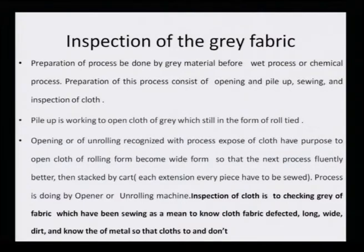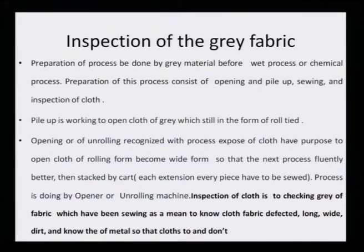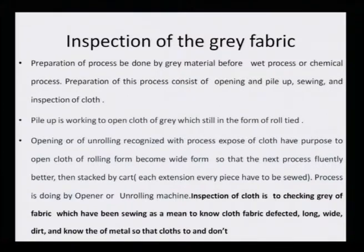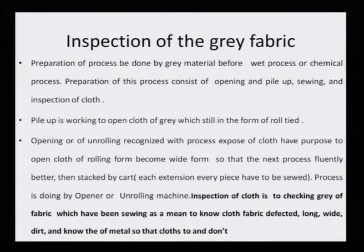Inspection of the gray fabric: preparation consists of opening, piling up, sewing, and inspection of the cloth. Opening or unrolling of the cloth has the purpose of opening the cloth from its rolled form before wet or chemical processing is carried out. The main thing is the inspection of the cloth — checking the situation of the gray fabric: is it very dirty? Is it less dirty? Is it less oily? Does it have too much oil stain? And then one has to decide what is to be done next.